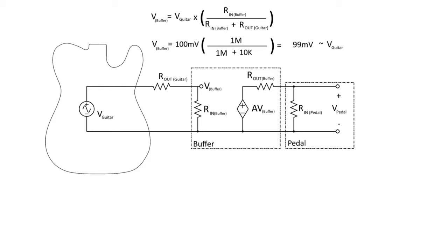You can see here the math now works out that the output of the buffer or the voltage of the buffer is going to be 99 millivolts, which is approximately the voltage of your guitar. So that is the V_buffer that's measured here and then used again here.